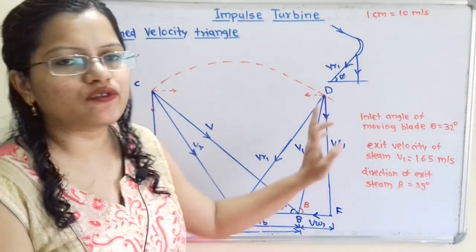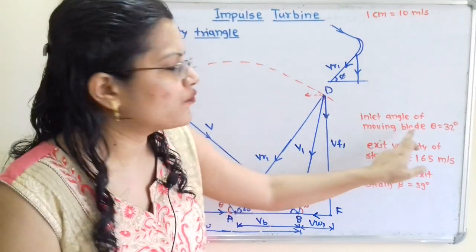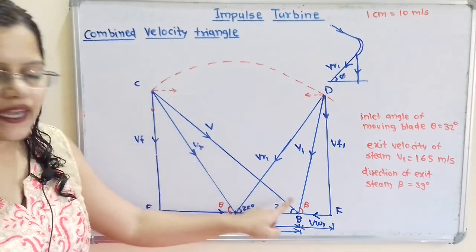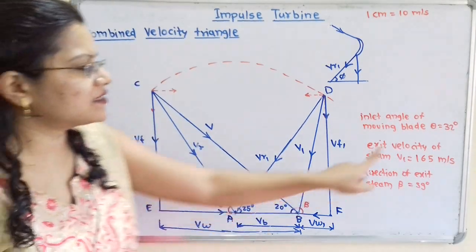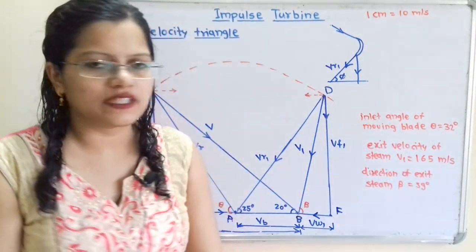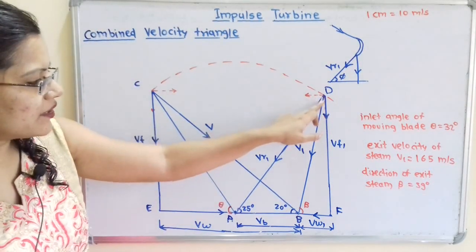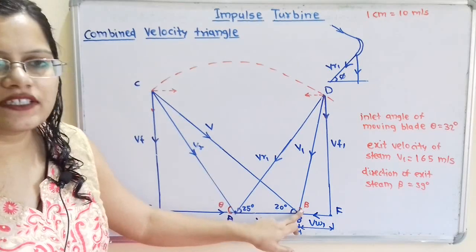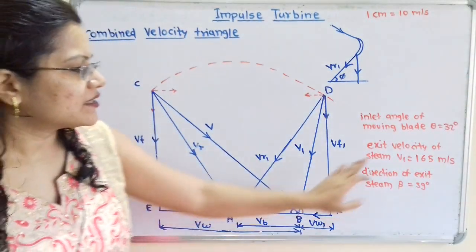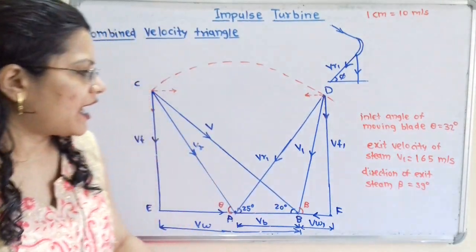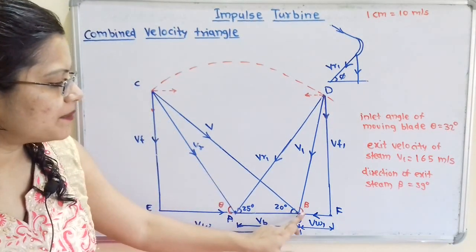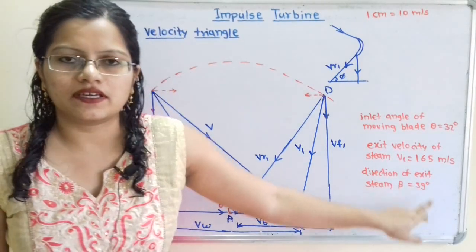From the diagram: the inlet angle of the moving blade, theta, is equal to 32 degrees. The exit velocity of steam V1 measures 16.5 cm, which converts to 165 m/s. The direction of exit steam, angle beta, is equal to 59 degrees.